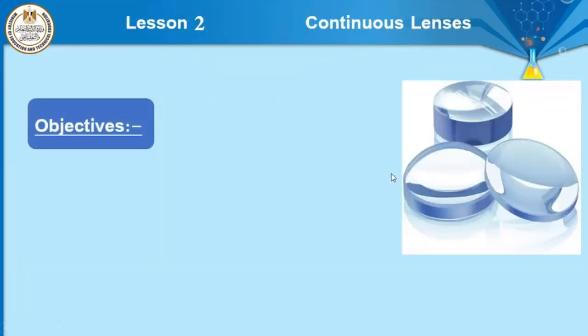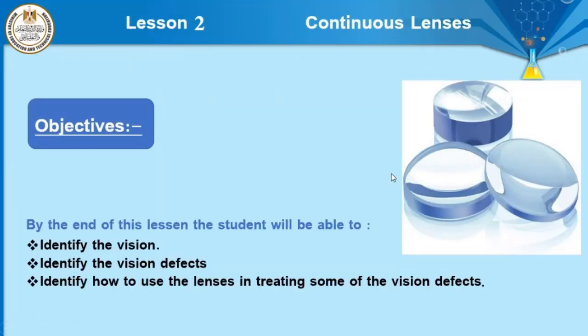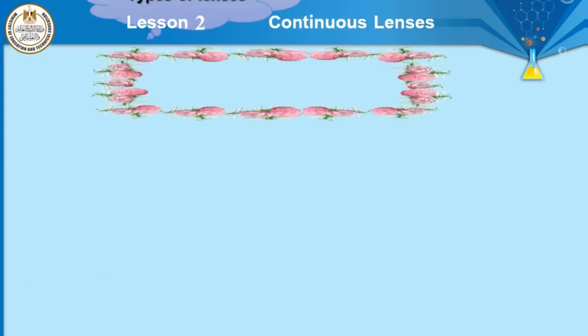Now, we will learn some objectives. Number 1, identify the vision. Number 2, identify the vision defects. Number 3, identify how to use lenses in treating some of the vision defects. Let's start.